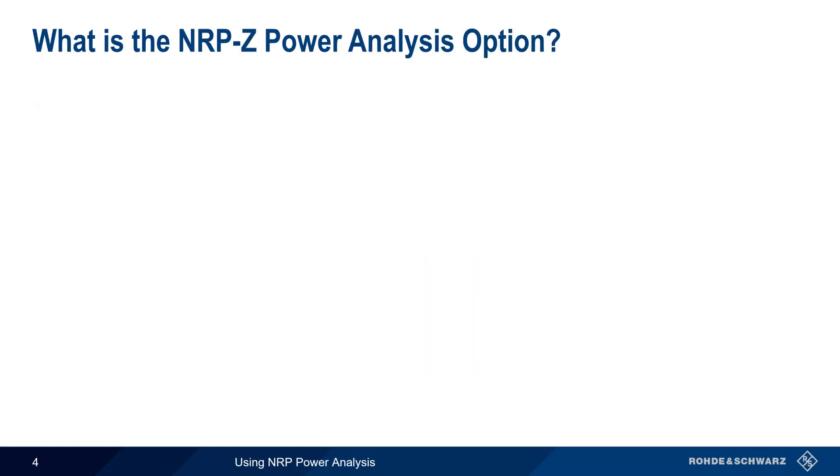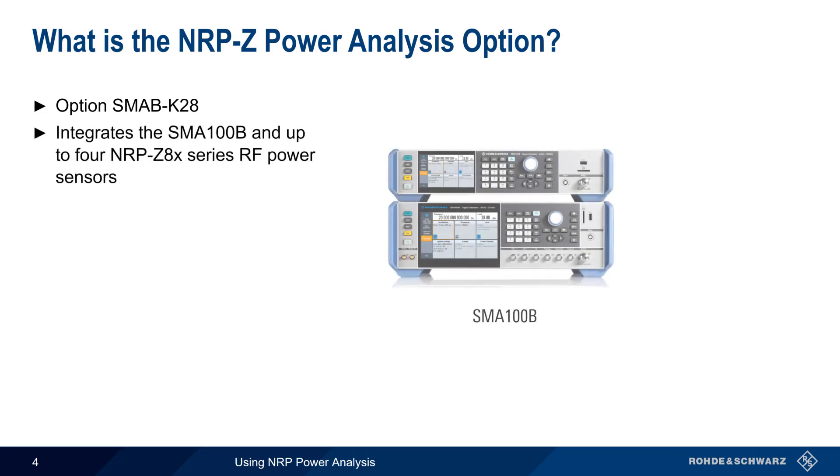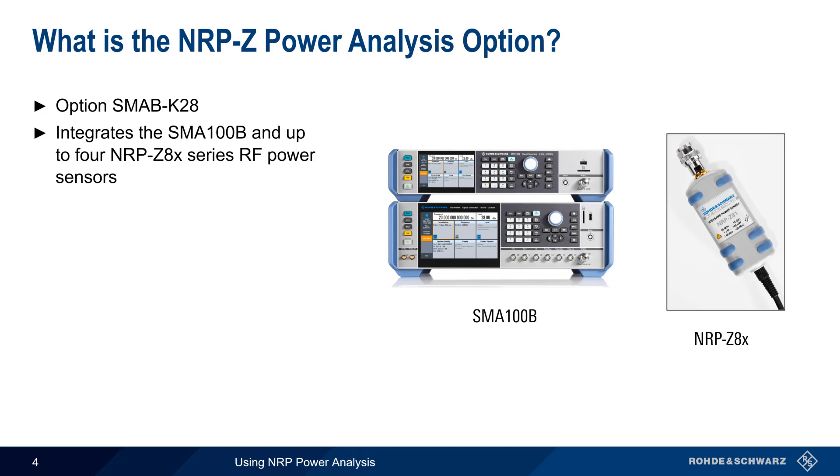The NRP-Z power analysis option, SMA-BK28, enables the integration of an SMA-100B and up to four NRP-Z8X power sensors. We can use this option to measure power versus frequency, power versus power, and power versus time. In the remainder of this presentation, we'll talk about each of these applications and show actual measurement results made with this option.